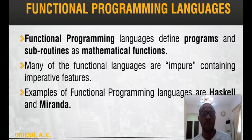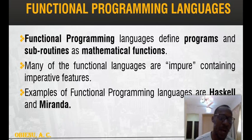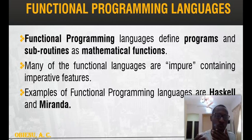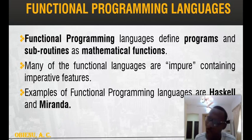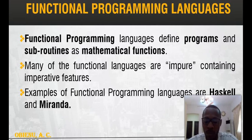Functional Programming Languages define programs and sub-programs as mathematical functions. Just like in mathematics we have functions such as integrals, once you call those functions they give you a result. Instead of building programs in terms of modules, they define programs and sub-routines as mathematical functions. Two examples of functional programming languages — though not very common — are Haskell and Miranda.